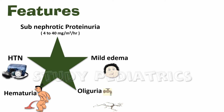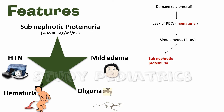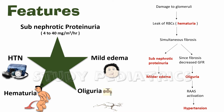Although a direct sequel cannot be drawn as in nephrotic syndrome, further damage to the glomeruli results in leak of RBCs. As the disease progresses, fibrosis occurs which prevents massive protein leak, hence milder edema. There is also a decrease in filtration across the glomeruli causing oliguria, which provides feedback for RAS activation to increase GFR, resulting in increased blood pressure.